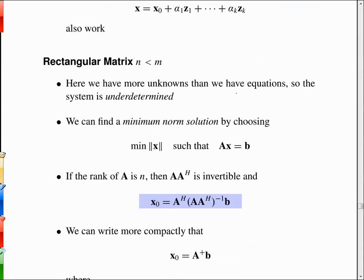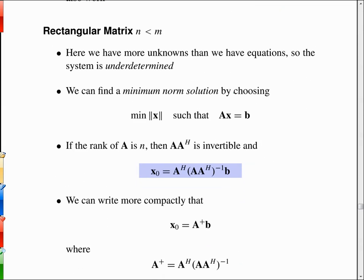Then the other two relatively new cases, because I'm not sure that I remember doing this in linear algebra, but maybe you guys did, is the underdetermined case where n is less than m, so the number of rows is less than the number of columns. So we have more unknowns than equations, so the system is underdetermined.